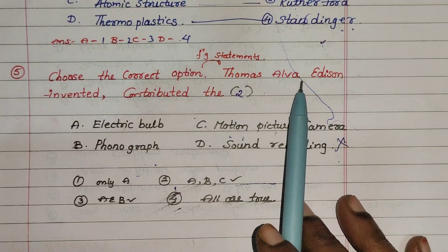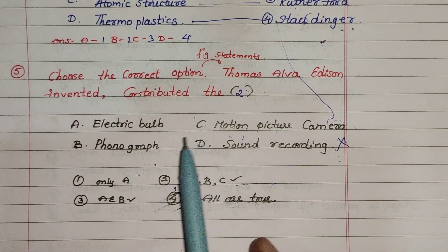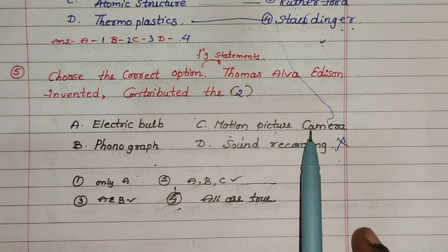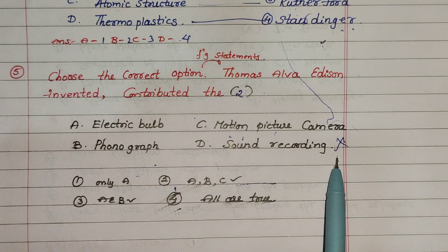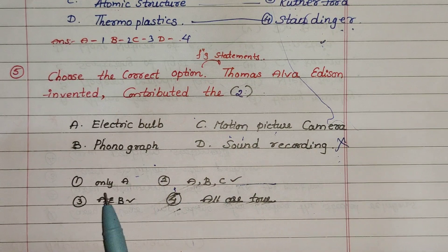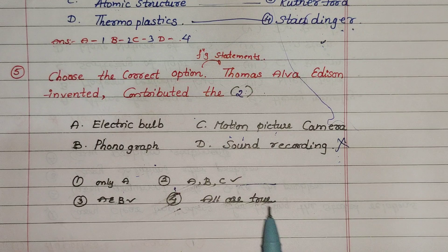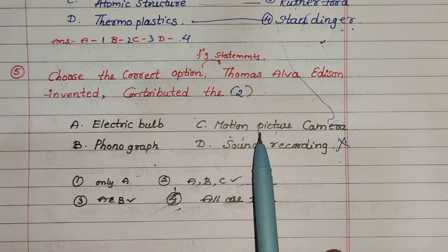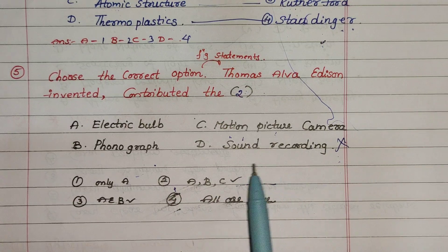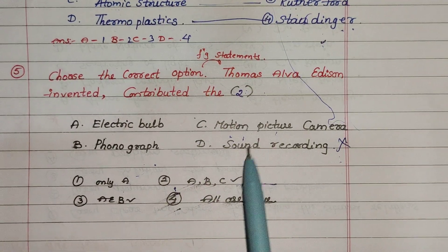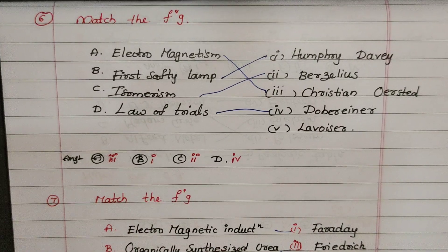5th question: Electric Bulb, Phonograph, Motion Pictures Camera, Sound Recording — all invented by Edison. The correct option is A, B, C — electric bulb, phonograph, motion picture camera. Correct option is option 2: A, B, C.